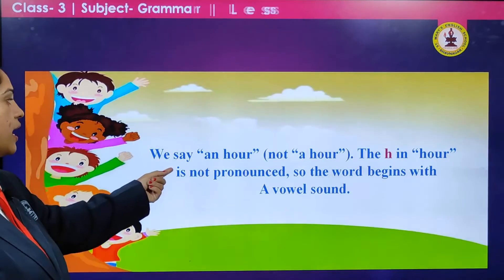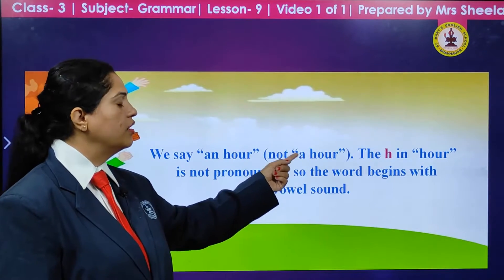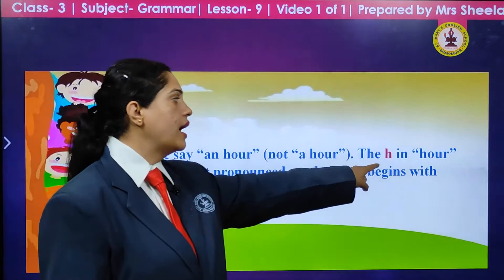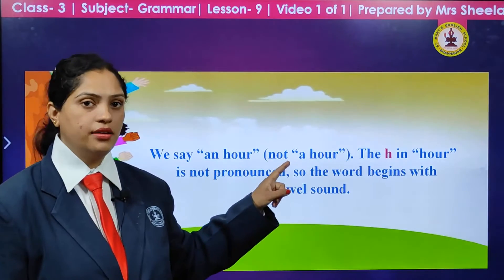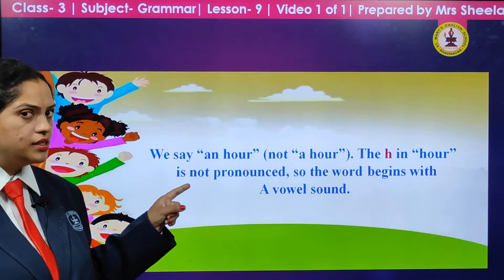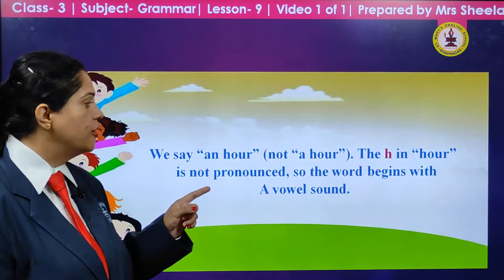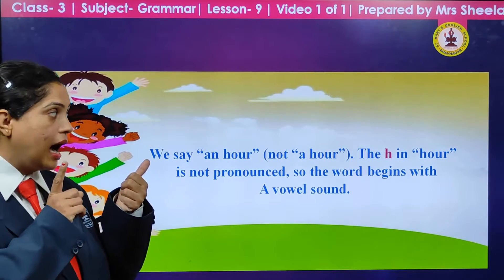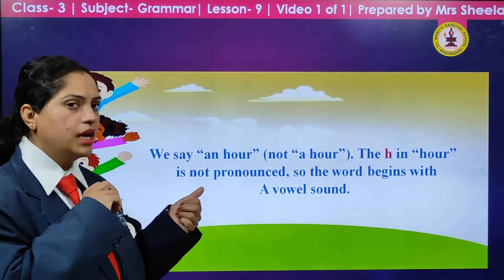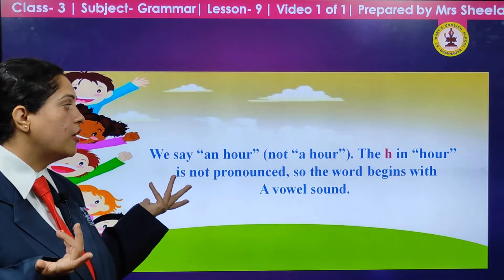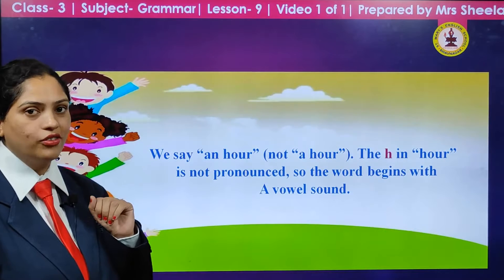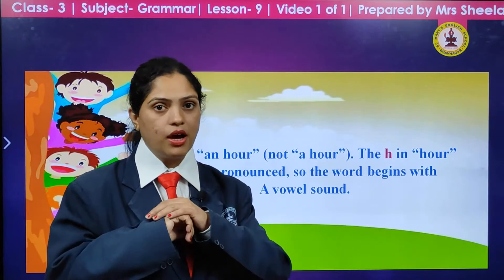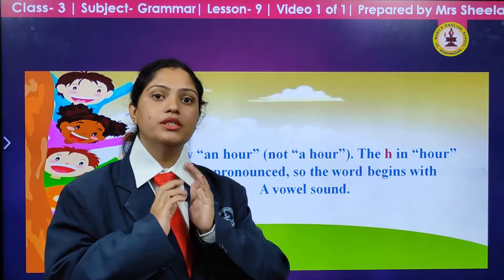See here — a tricky one. We say an hour, not a hour. Why? The spelling is starting with H, and H is a consonant. But the H in 'hour' is not pronounced. We do not say 'har.' We say 'hour.' So the H in the word 'hour' is silent. The word begins with a vowel sound when we speak it. What we can hear is a vowel sound, and so instead of using a hour, we use an hour.